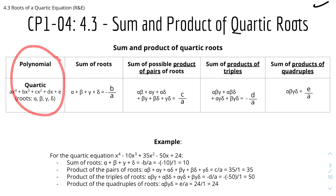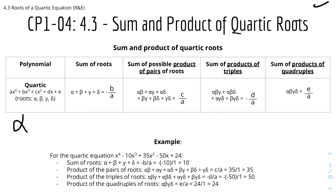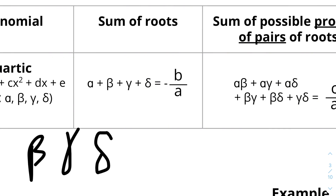So we have the sum and product of quartic roots. The polynomial we're looking at is quartic: ax⁴ + bx³ + cx² + dx + e, and it has roots alpha, beta, gamma, and delta. The sum of the roots is alpha + beta + gamma + delta = −B/A, just like the sum of quadratic or cubic roots. This can be written in sigma notation as Σα.